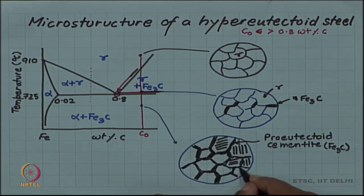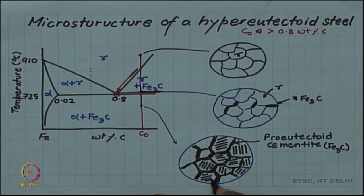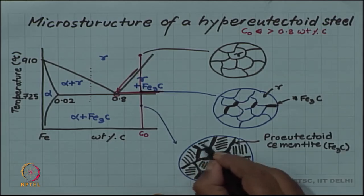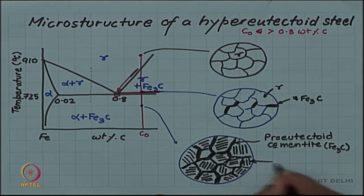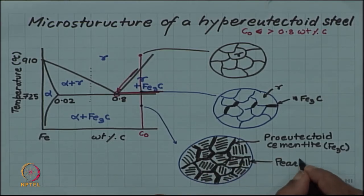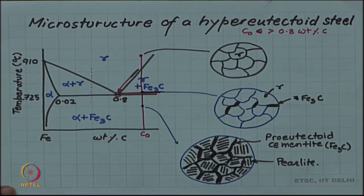The remaining on cooling austenite will form into pearlite. You will have pearlite forming. Whatever austenite was left at 725 degrees on cooling will transform into mixture of alpha and Fe3C. That is pearlite.